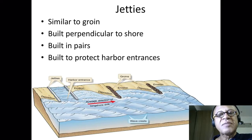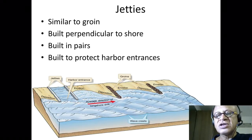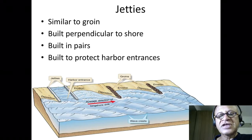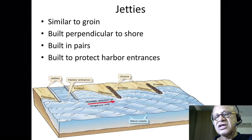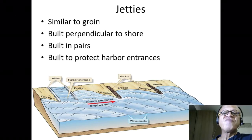Jetties are structures that create more protected areas, typically for parking boats. Here you can see an example of a jetty alongside the groins we looked at — sand is building up on the updrift side as longshore drift moves in that direction. Over time the sand builds up and can spill around to the other side, changing the dynamics and time scales of sand movement.